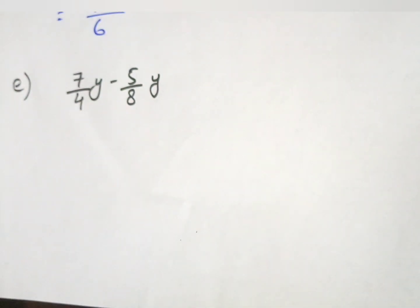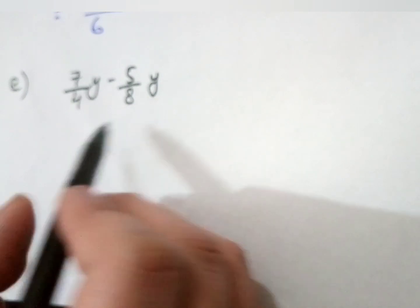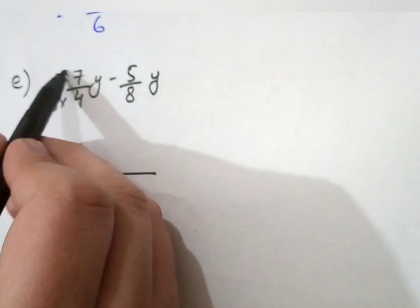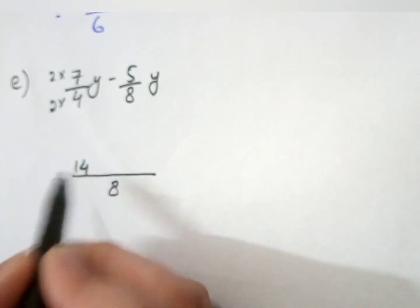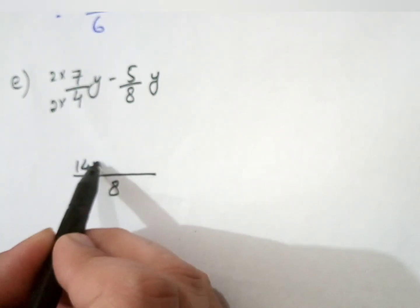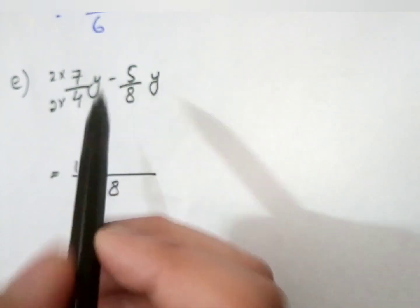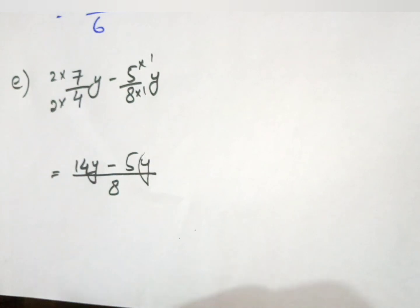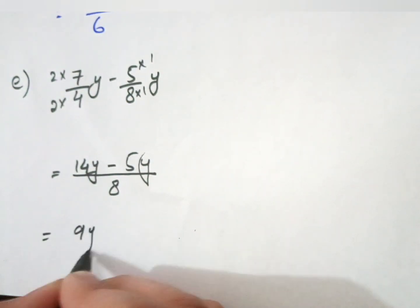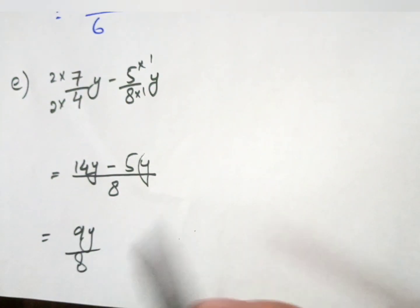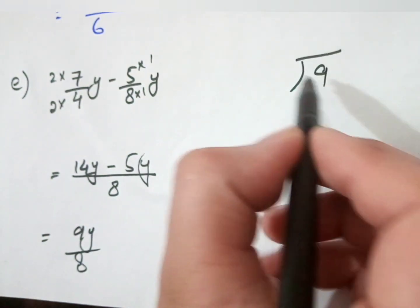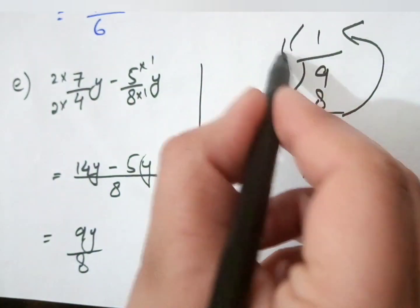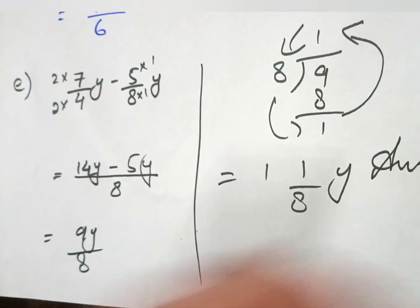In Part E we have 7 over 4 times y minus 5 over 8. First we take the LCM of 4 and 8, which is 8. Multiply 4 by 2 to get 8, so multiply the numerator also by 2: 2 times 7 equals 14y. The next sign is minus; 8 times 1 equals 8, so multiply numerator by 1: giving 5y. Now 14 minus 5 equals 9, so we get 9y over 8. This is an improper fraction, so converting: 9 divided by 8 gives 1 remainder 1, so the mixed number answer is 1 and 1 over 8 times y.